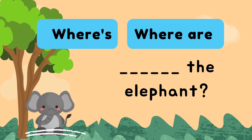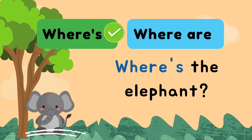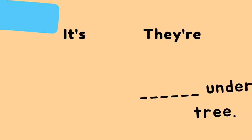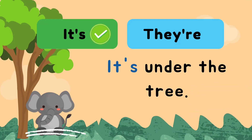Question number five. Where's the elephant or where are the elephant? We only see one elephant, so we use where's the elephant. For the follow-up, it's under the tree or they're under the tree? We use it's because there's only one elephant.